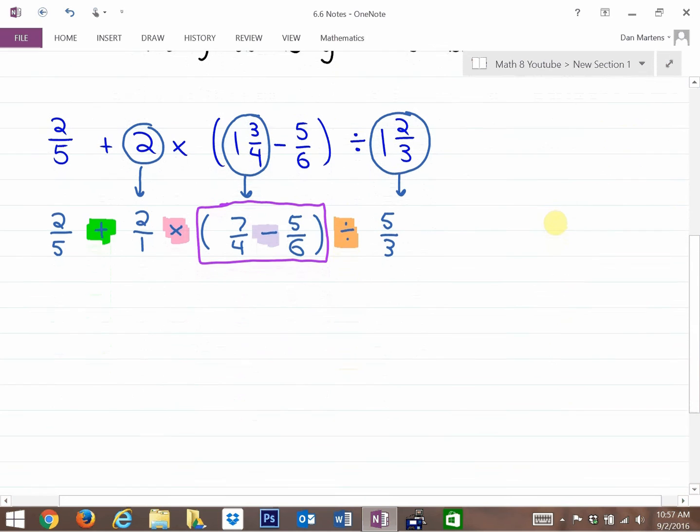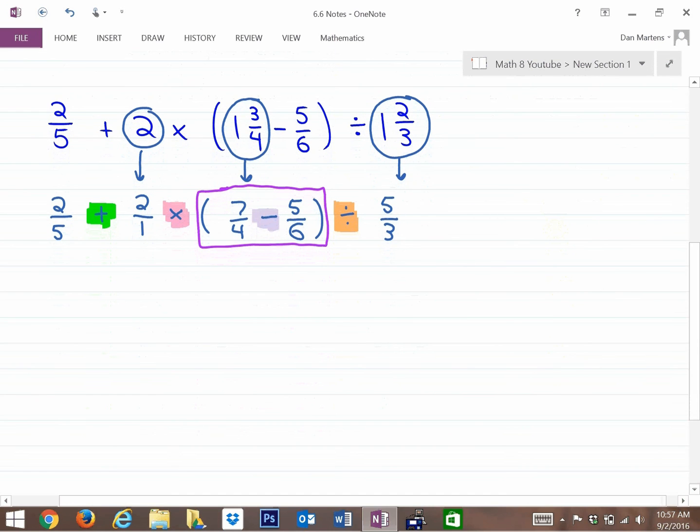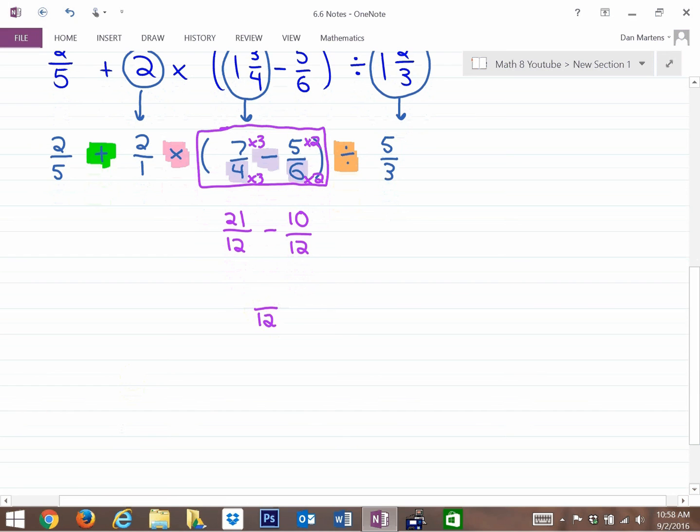First, I want to do the subtracting operation in the brackets. Because it's subtracting, we need a common denominator. 4 and 6 both go into 12. To make 4 into 12, times by 3, so 7 times 3 is 21 over 12. The second fraction, multiply by 2: 5 times 2 is 10 over 12. Once you've got a common denominator, it doesn't change. So 21/12 minus 10/12 is subtracting the numerators: 21 minus 10 is 11/12.